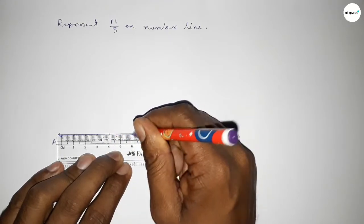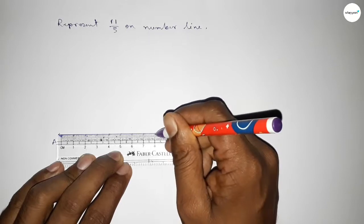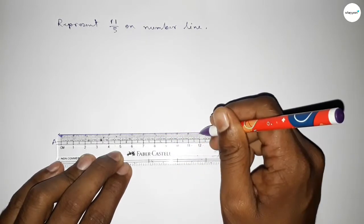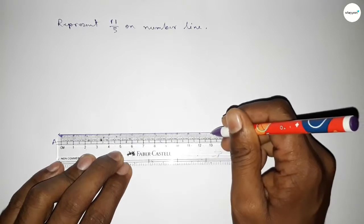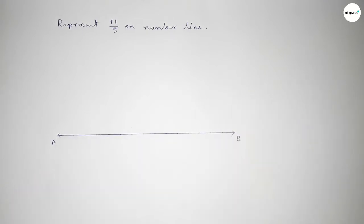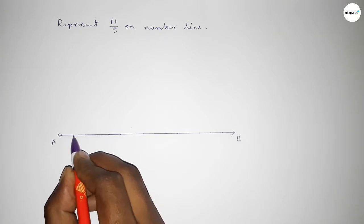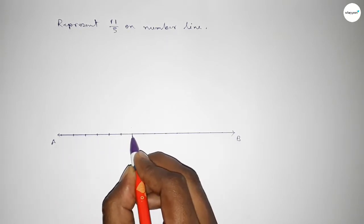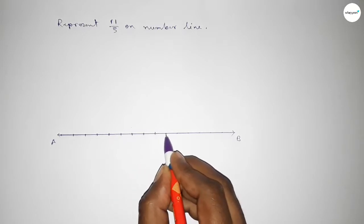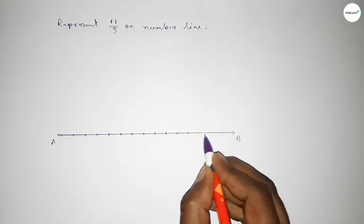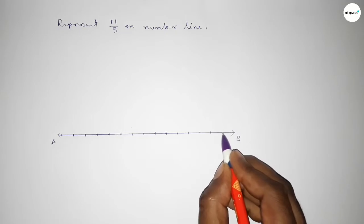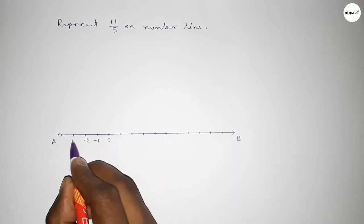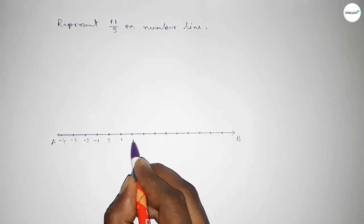Marking the numbers on the line with deep color to understand perfectly. Taking here starting number zero, this side minus one minus two minus three minus four, and this side one two three four five six seven eight nine ten.